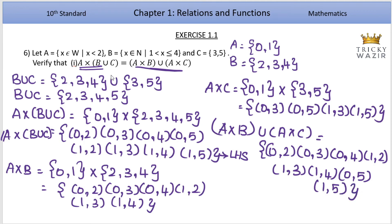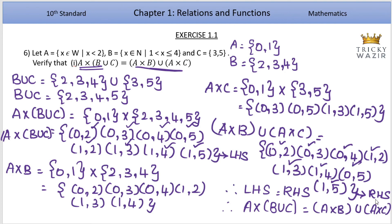A cross B union A cross C equals RHS. LHS has 0,2, 0,3, 0,4, 0,5, 1,2, 1,3, 1,4, 1,5 which are equal. Therefore LHS equals RHS. A cross B union C equals A cross B union A cross C is verified. Thank you.